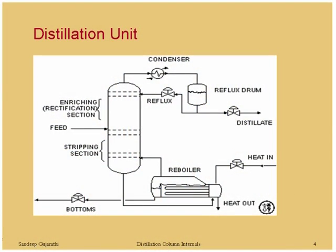In a distillation column, the section above the feed is the rectification section and below that is the stripping section. There is a condenser for condensing vapors to create reflux — part of which is returned as reflux — and the distillate product comes out from the top. There is a reboiler for generating vapor to achieve vapor-liquid traffic within the column. The main objective of column internals is to achieve vapor-liquid contact.